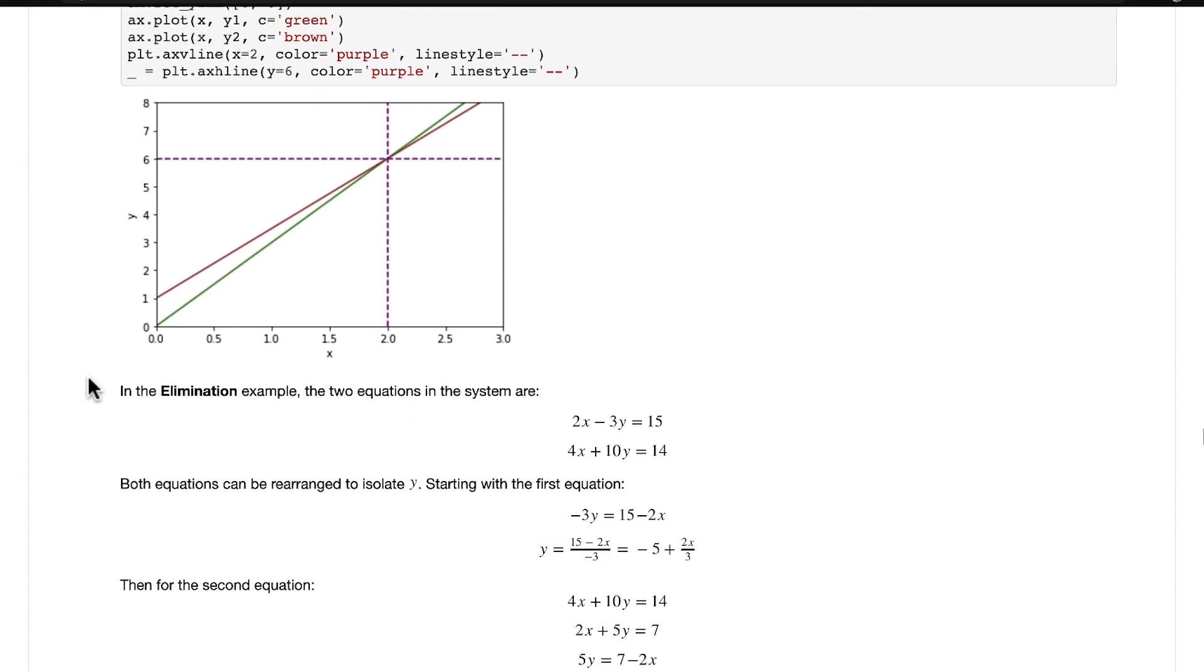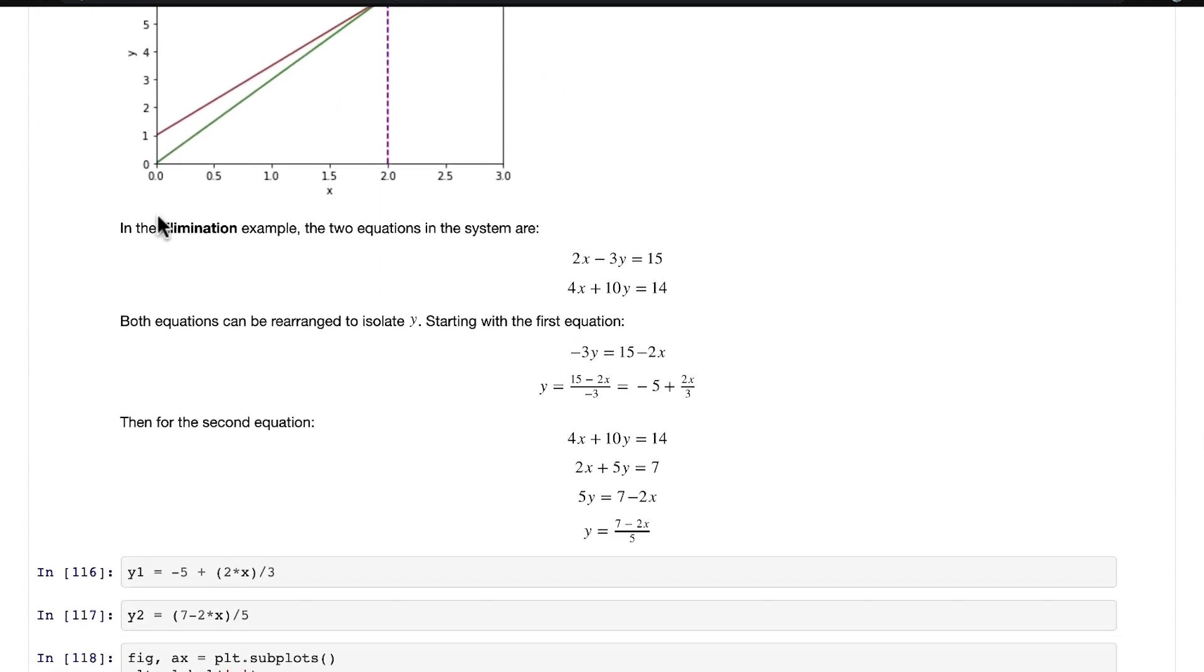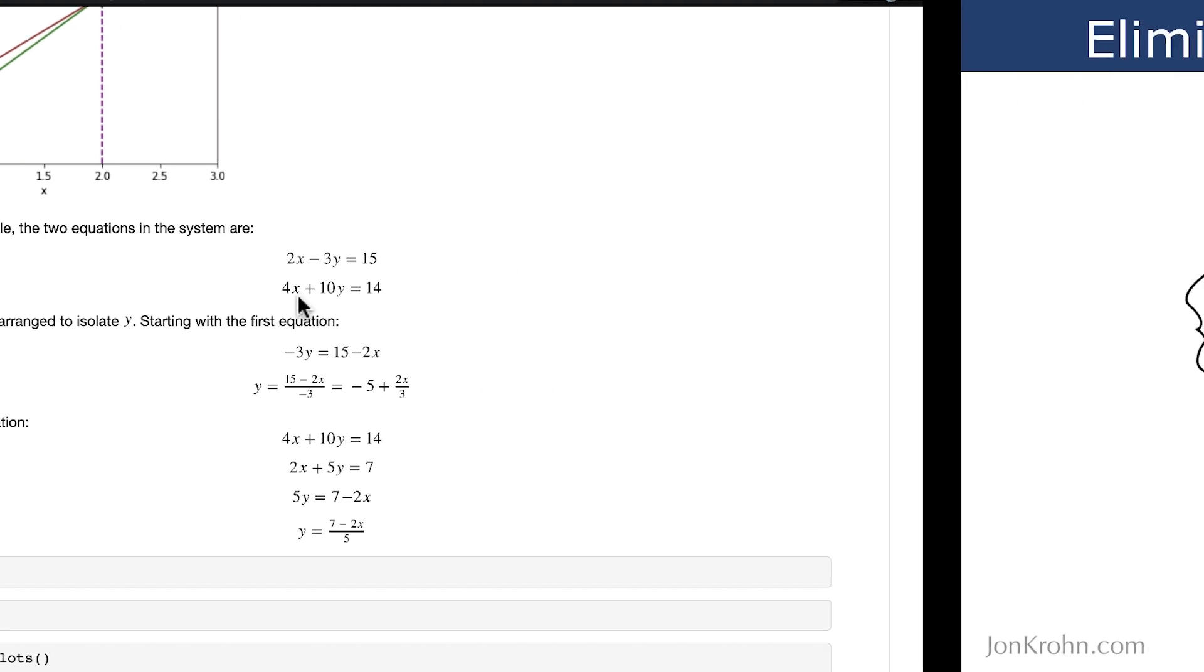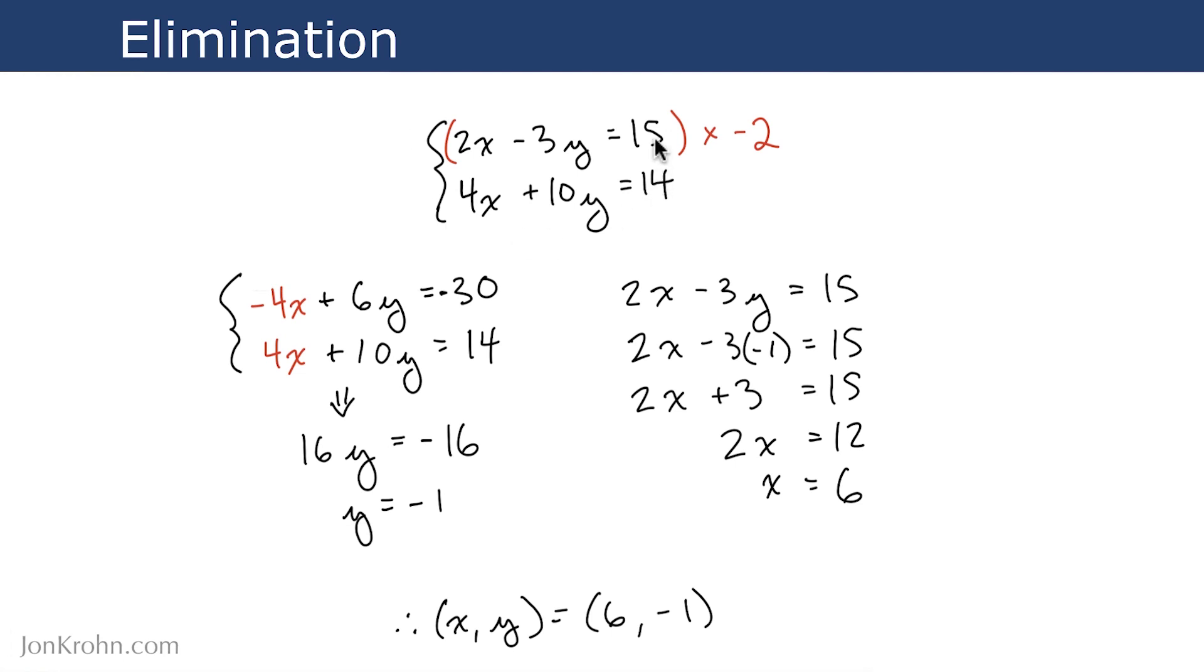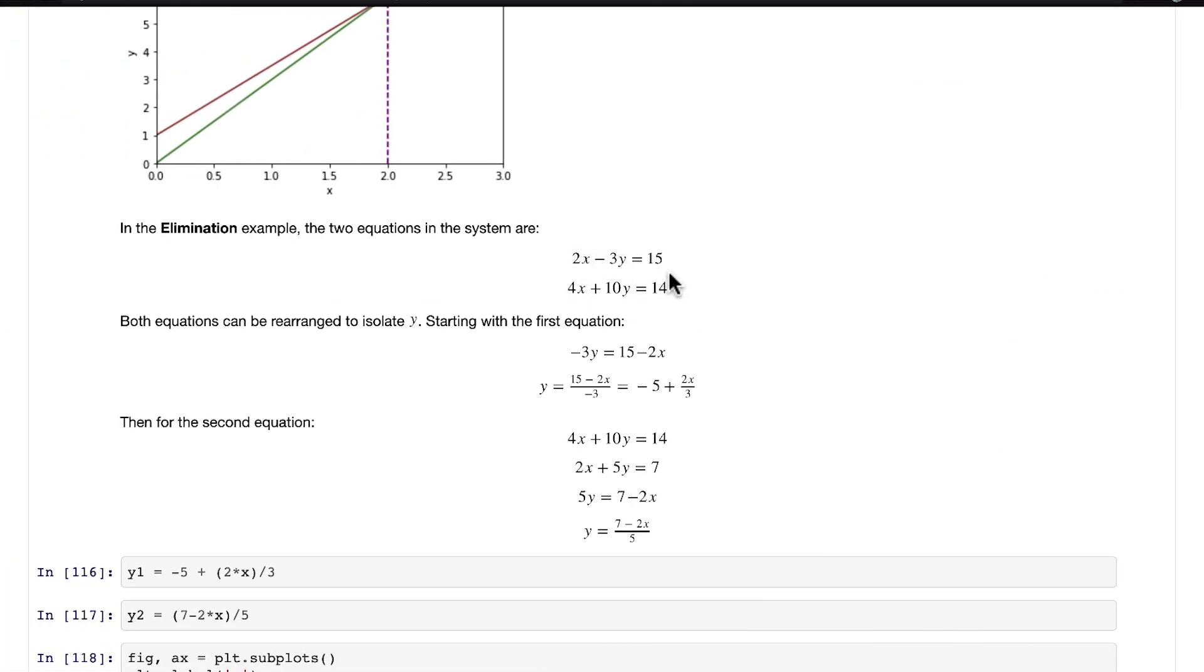As one further example, let's also go through the elimination example that we worked through together. So in that example, this is what it looked like when I first provided it. We can take these two equations in the system and represent them in the Jupyter notebook here. In this case, in order to isolate y and make y a function of x in our Python code, we're going to need to rearrange both of the equations.